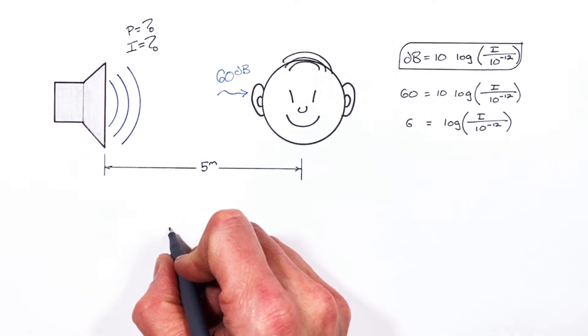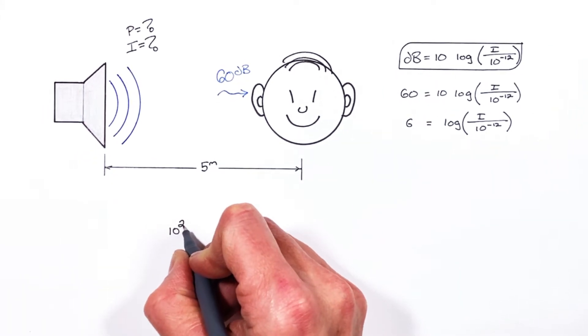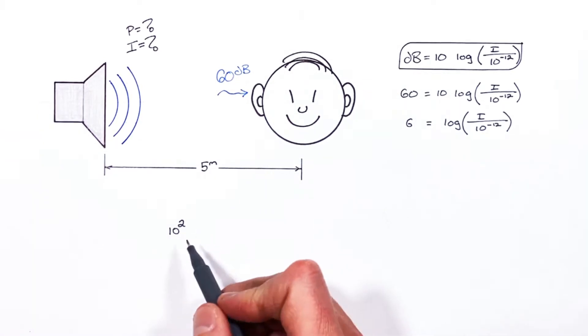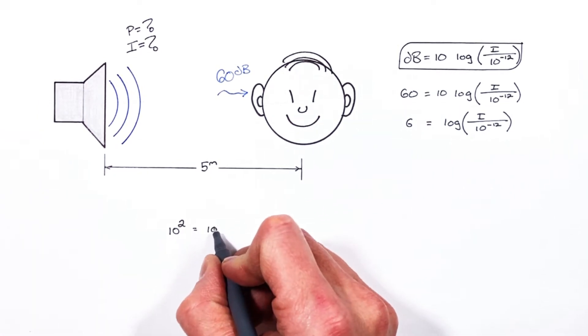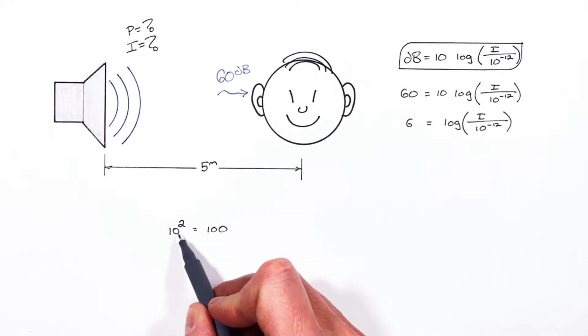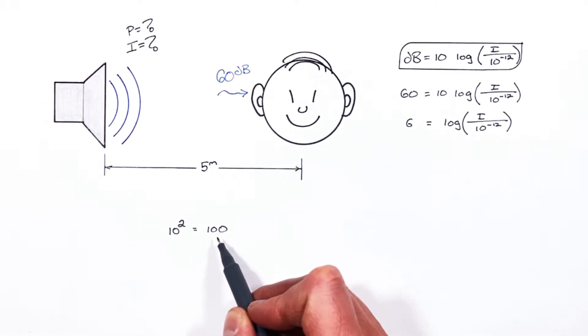So to do that I want to take a look at the value 10 to the 2 or 10 to the second power. We know 10 to the second power, 10 squared, is 100. So when we have the function 10 squared it yields the value of 100.